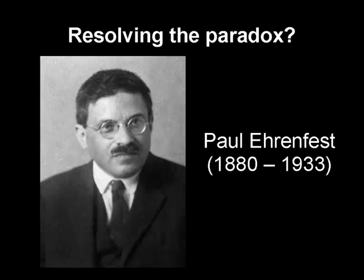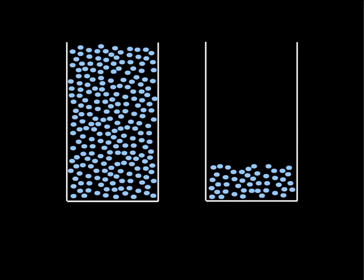There is however a famous argument that seems to resolve the paradox. It was first proposed by Paul Ehrenfest. Consider two containers with an initial condition like this. Then, at each time step, randomly pick one of the balls and switch its place from one container to the other.